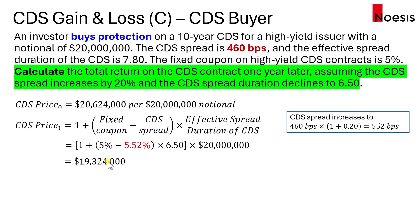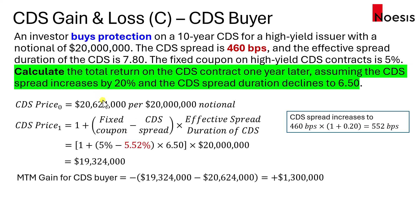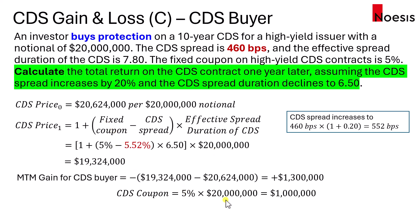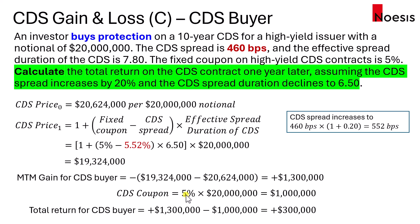The price has dropped over that one year, so when the price drops it is a gain for the short position, which is the investor — the CDS buyer. The mark-to-market gain is the difference in price with a negative sign for the short position, giving a gain of $1.3 million. Because the question asks for total return, we also consider the coupon: 5% fixed coupon times $20 million notional equals $1 million. The buyer pays the premium, so the overall return is the gain of $1.3 million minus the $1 million premium paid, giving a total return of positive $300,000.